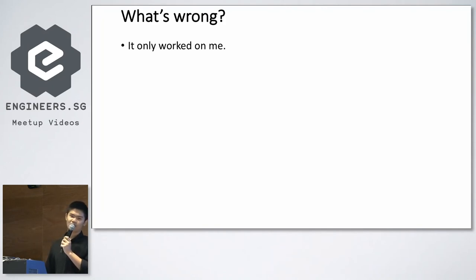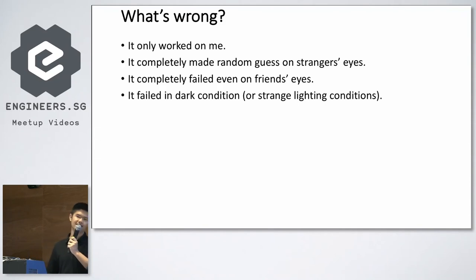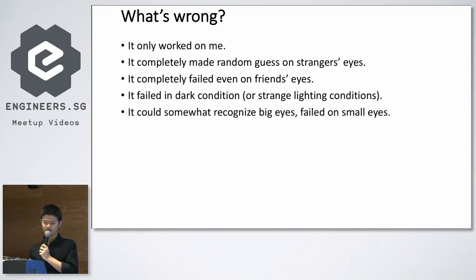It makes sense if I train it on my own data, using only my own eyes. That demo I just showed trained the model with just my eyes. But after I decided to collect my friends' data, it completely makes random guesses on strangers' eyes. It also failed on one of my friend's eyes, even though their eyes are in the training dataset. It also performed very bad in dark conditions or strange lighting conditions, like different light indoors or outdoors. Some friends with very big eyes improved it a little bit, but others with very small eyes had no clues at all.